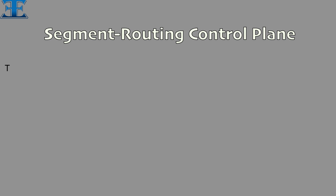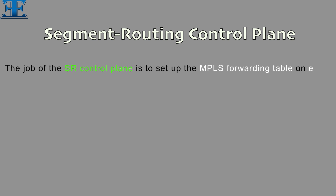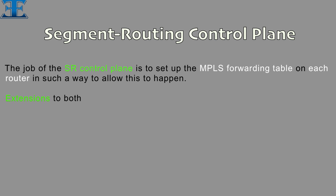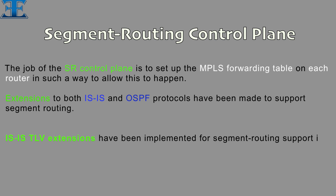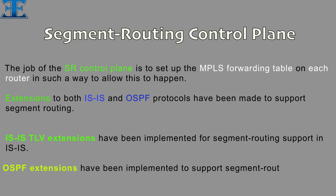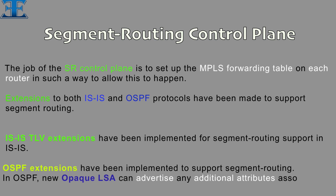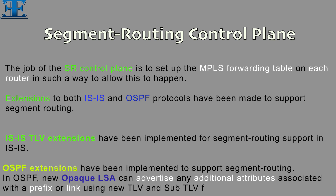Segment routing control plane. The job of the SR control plane is to set up the MPLS forwarding table on each router in such a way to allow this to happen. Extensions to both ISIS and OSPF protocols have been made to support segment routing. In OSPF, new opaque LSAs can advertise any additional attributes associated with a prefix or link using new TLV and sub-TLV for segment routing.